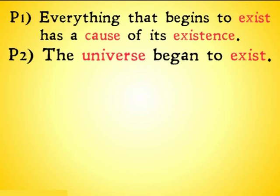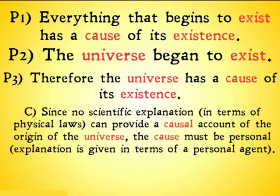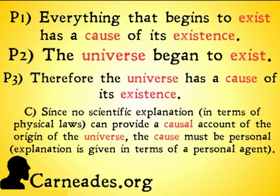That was a series of objections to the universe began to exist, premise two. Premise three just logically follows from premises one and two. I covered this in the original Kalam Cosmological Argument piece. It's not something that one would really object to. The only way you could really do it would be to say that the universe isn't a kind of thing that the causal principle applies to. If you wanted to do that, you should check out my video on Russell's objections to Thomas Aquinas' Cosmological Argument because that objection is going to be covered there. So our next video, therefore, is going to be objections to the final premise or conclusion of the Cosmological Argument. Since no scientific explanation in terms of physical laws can provide a causal account of the origin of the universe, the cause must be personal. Explanation is given in terms of a personal agent, also known as God. Watch this video and more at carneades.org and stay skeptical, everybody.